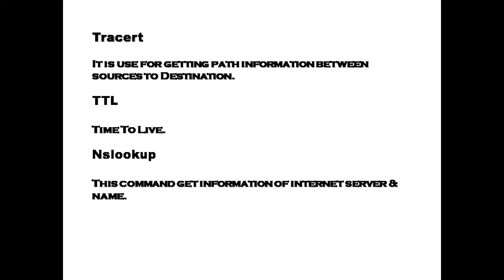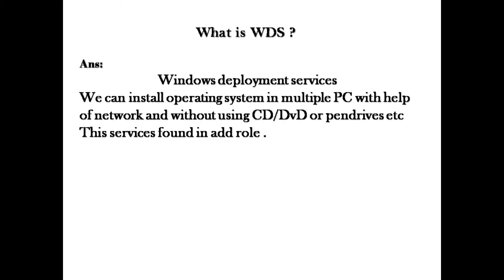The next question covers networking commands. First is the tracert command, which is used for getting path information between source and destination. Second is TTL — Time To Live — which you can see when you ping an IP address and get a successful message. Third is nslookup, which is used to get information about an internet server and its name.